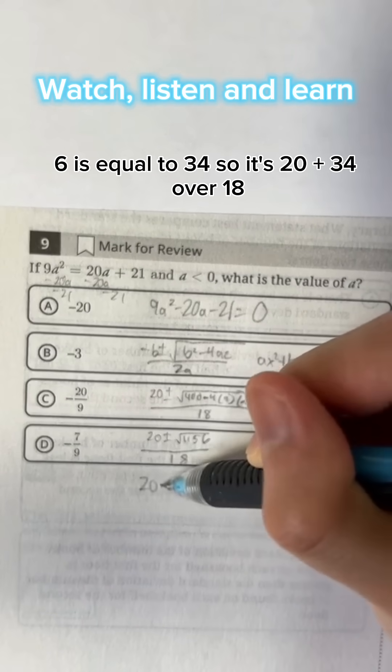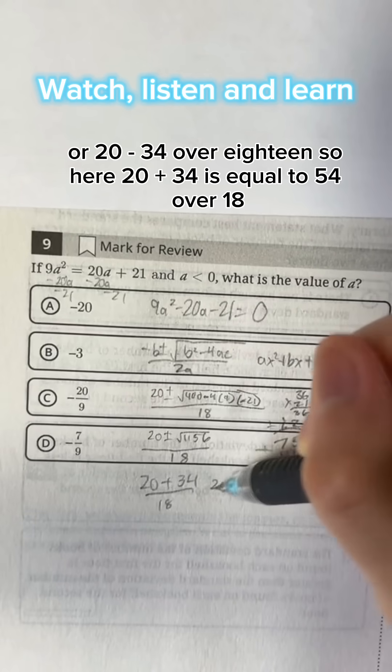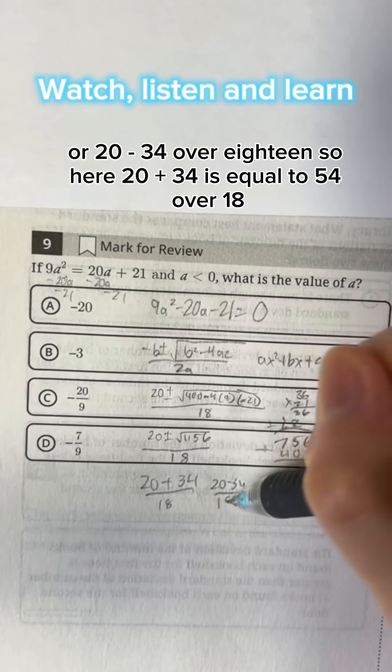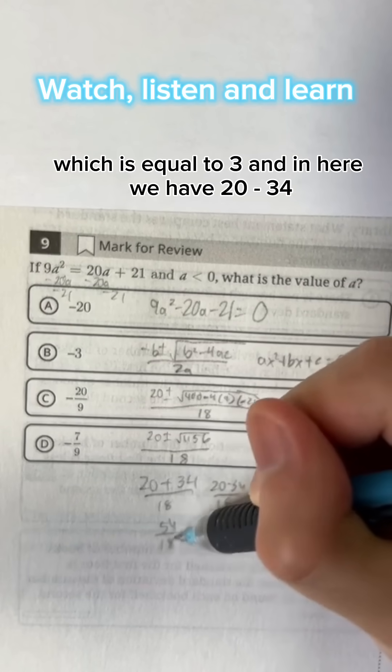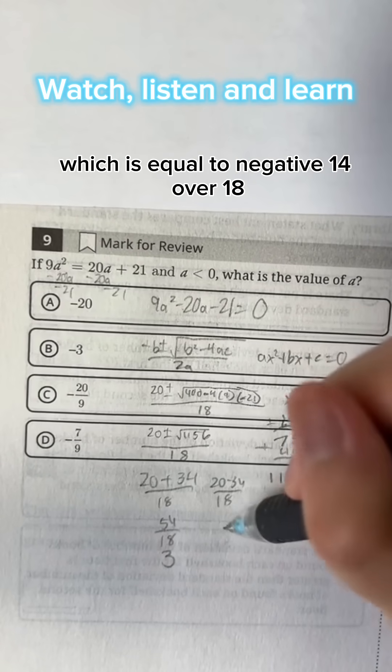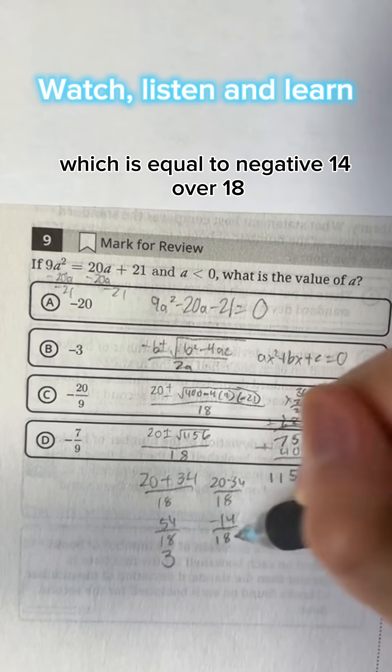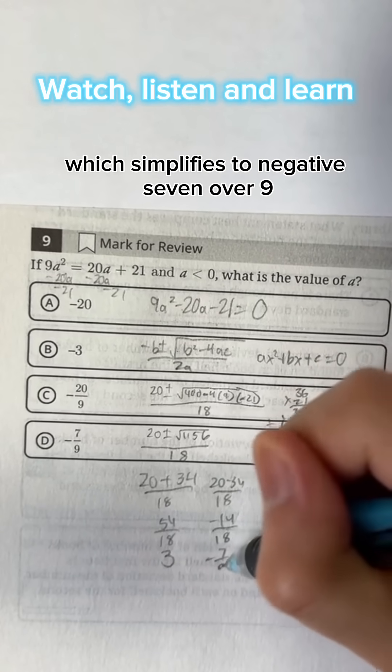So it's 20 plus 34 over 18 or 20 minus 34 over 18. So here 20 plus 34 is equal to 54 over 18, which is equal to 3. And here we have 20 minus 34, which is equal to negative 14 over 18, which simplifies to negative 7 over 9.